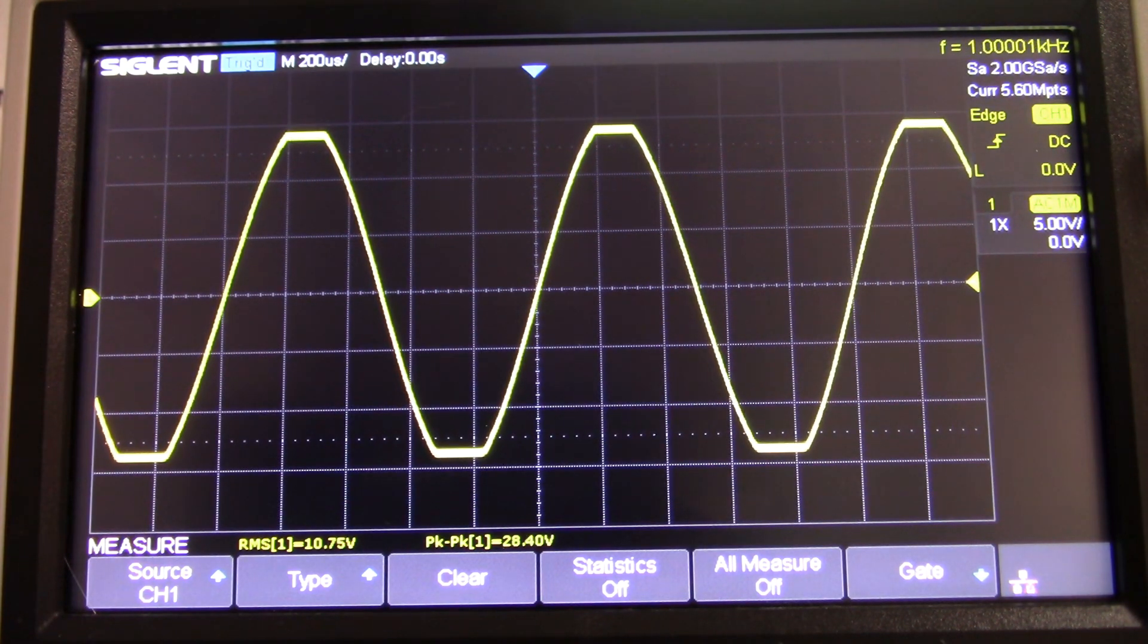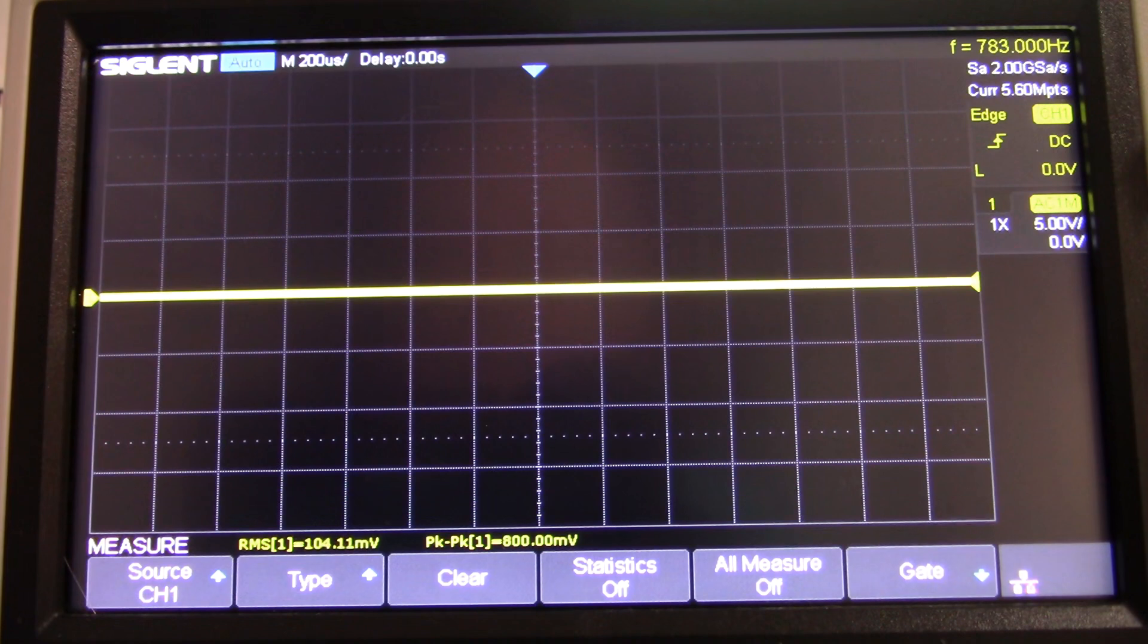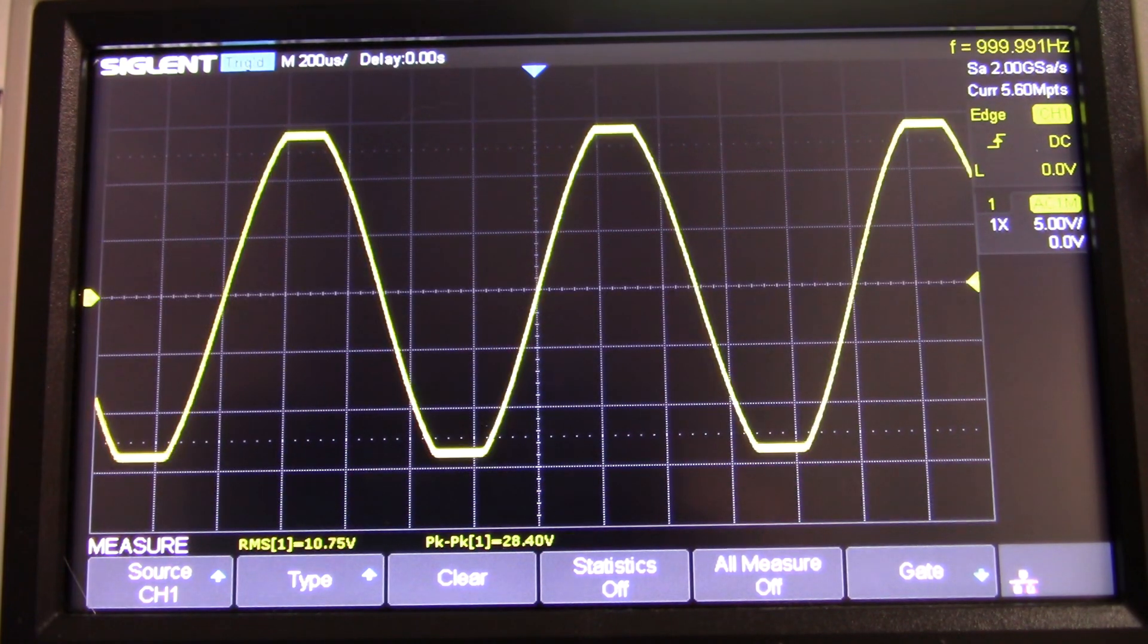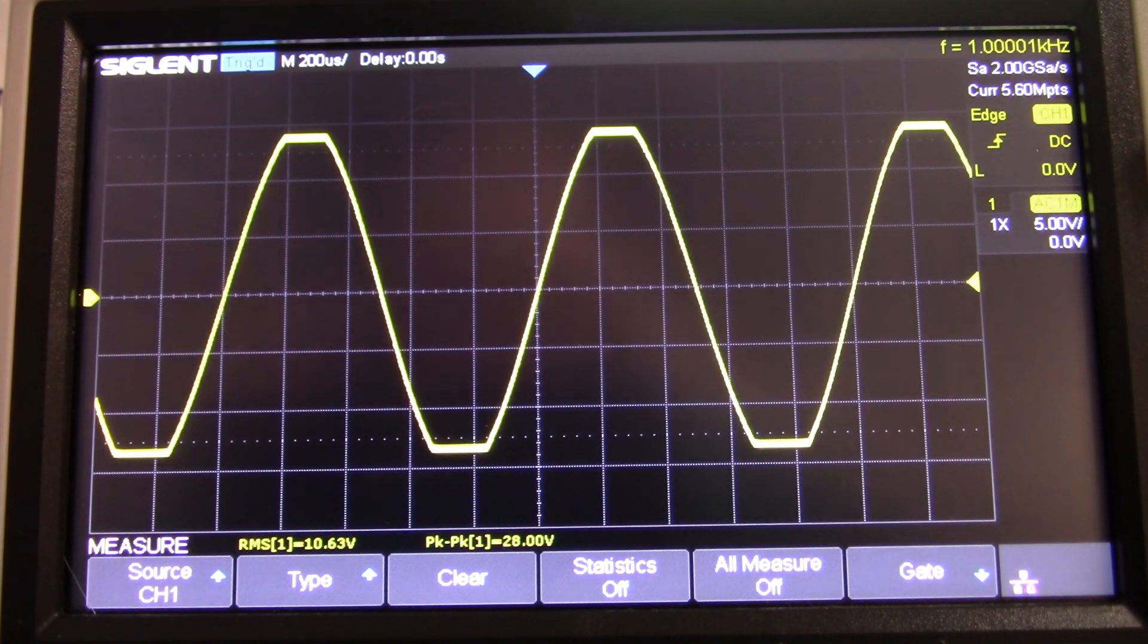It dropped to 28.4. Moving to the 1k resistor, it dropped to 28.0 volts peak to peak. Now at the 470 ohm resistor, we dropped to 27.2.